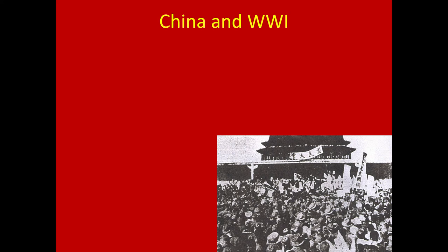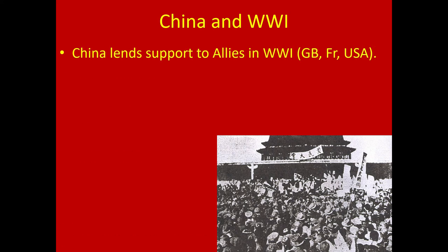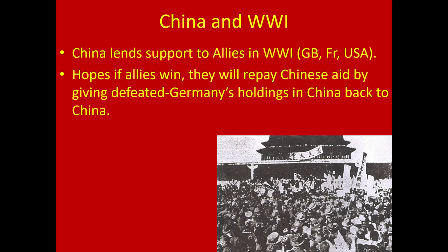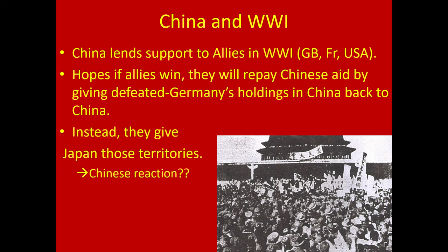China lends its support to the Allies with the hope that, by supporting them, if the Allies win they will get more respect from Great Britain, France, and the United States, and be able to recuperate some of the territory taken from them. The Allies do win, but they give German-held Chinese territory to Japan instead. How are the Chinese people going to feel about that? Pretty angry — and this launches what's called the May 4th Movement.